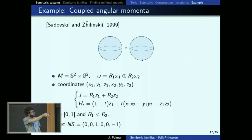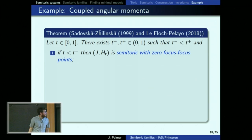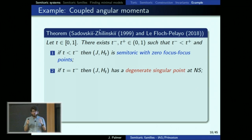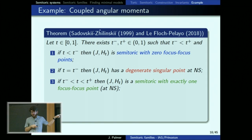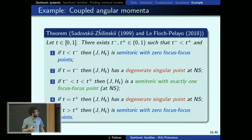The point of interest is North Pole–South Pole, abbreviated NS — the top of one sphere crossed with the bottom of the other. The result, proven with all invariants computed in a paper of Le Floch–Pelayo 2018, is that for t less than t_minus there are no focus-focus points (starting from the toric system). At t_minus, a degeneracy appears at North Pole–South Pole, and then for t between t_minus and t_plus a focus-focus point appears there. Then the point becomes degenerate again and finally elliptic-elliptic again. So there is a transition going on at that point.